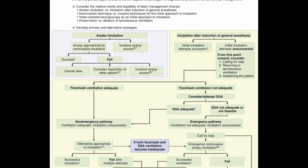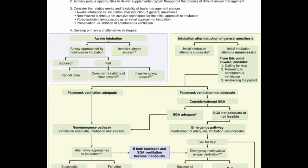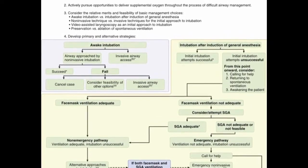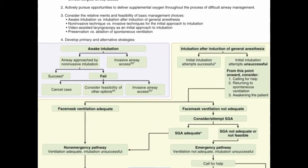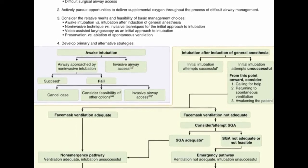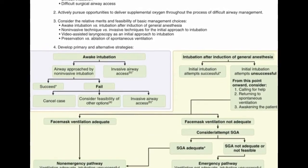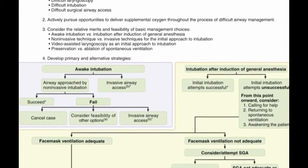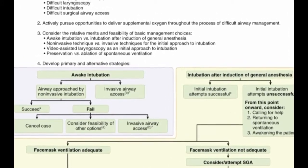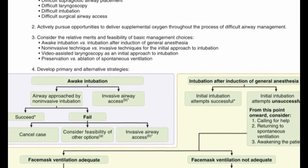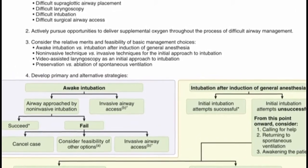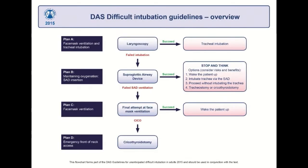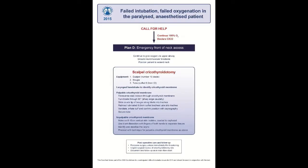The ASA Difficult Airway Algorithm directs clinicians to assess the likelihood and clinical impact of basic management problems, actively pursue opportunities to deliver supplemental oxygen throughout the process, and develop primary and alternative strategies — which can be Awake Intubation or Intubation After Induction of General Anesthesia. Awake intubation can be done by means of non-invasive intubation or invasive airway access. Fiber optic intubation is one of the many modalities by which we secure the airway in cases of difficult airway.